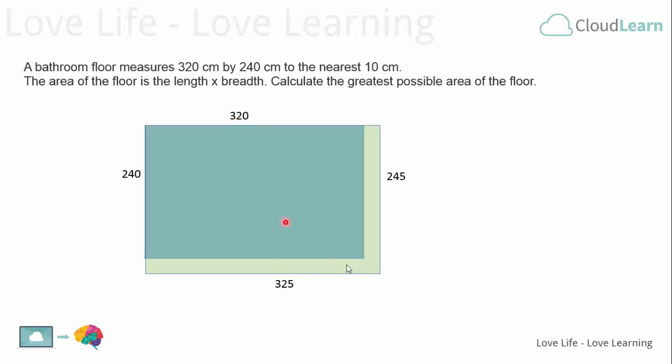So let's see what that gives us. The maximum area will therefore be 245 times 325, which will give us 79,625 centimeters squared. Thank you for listening.